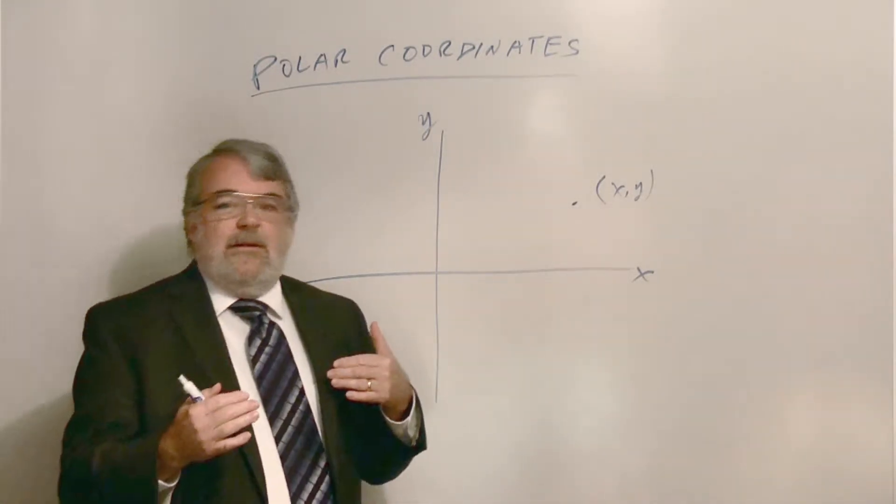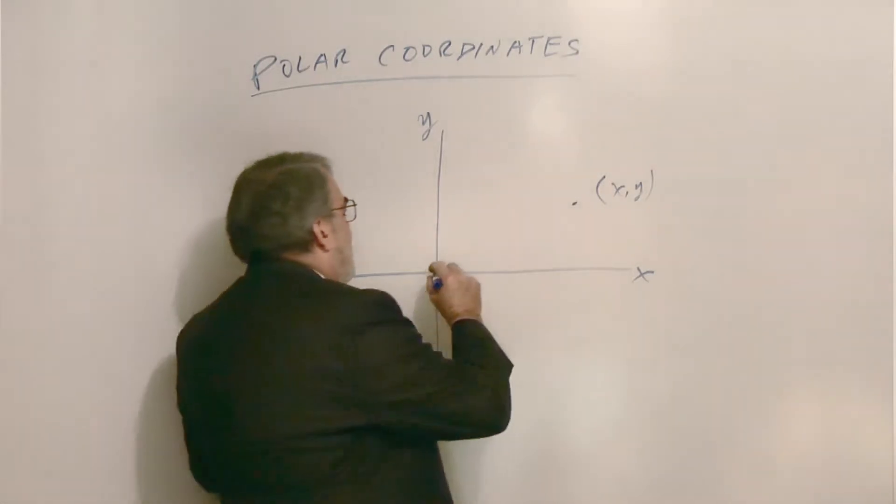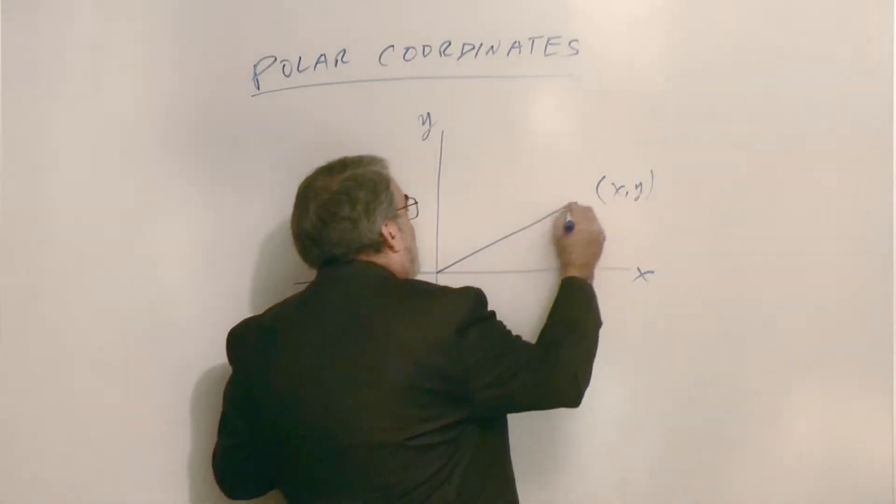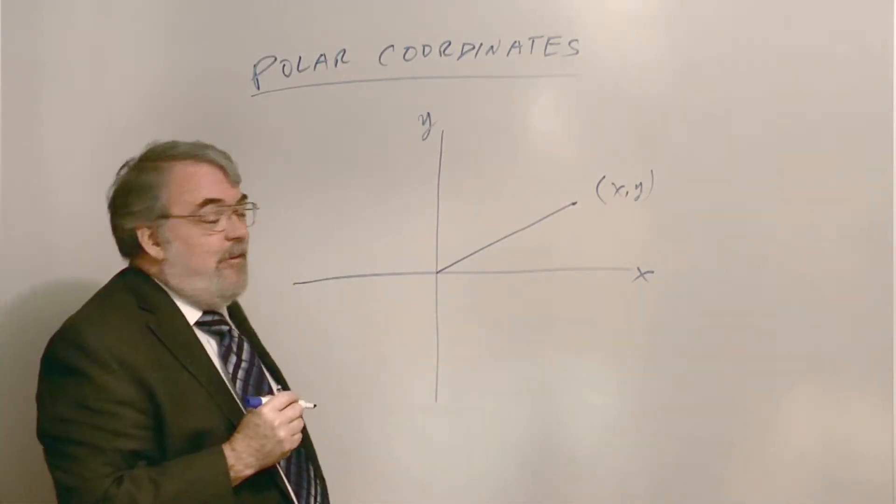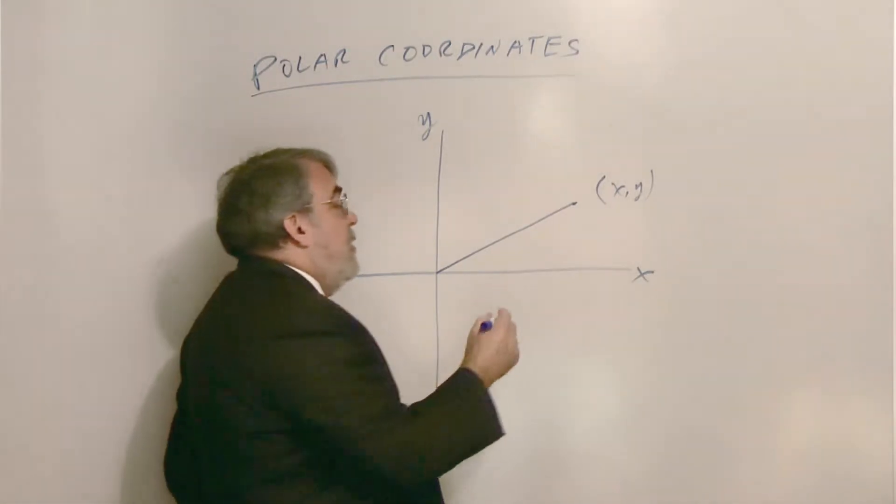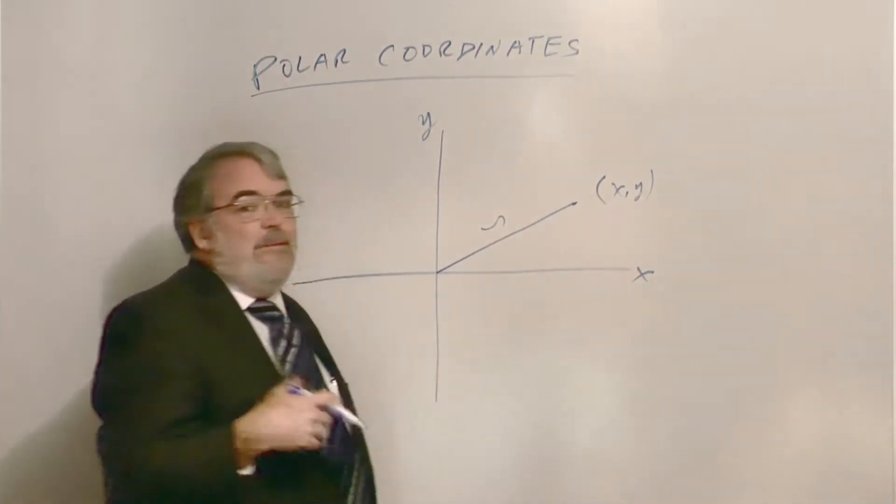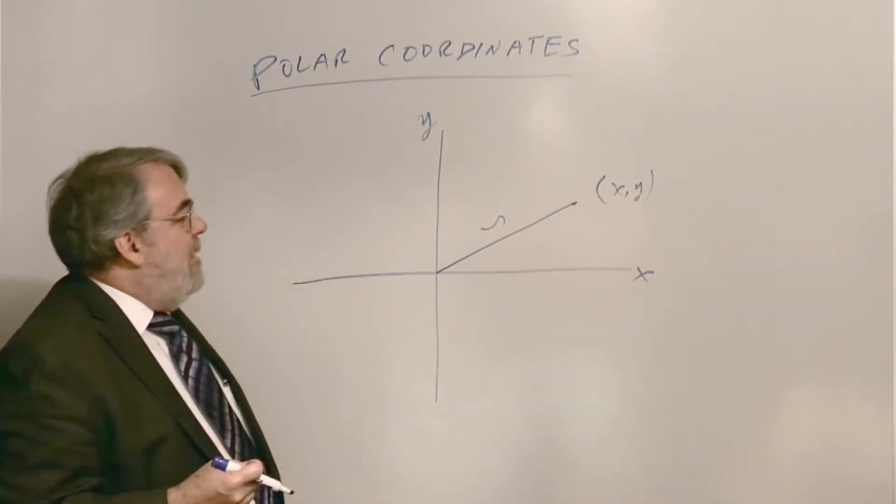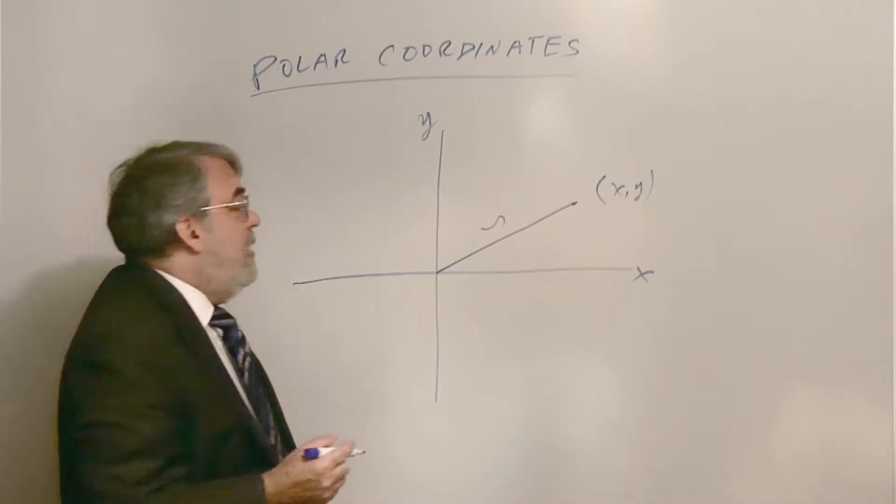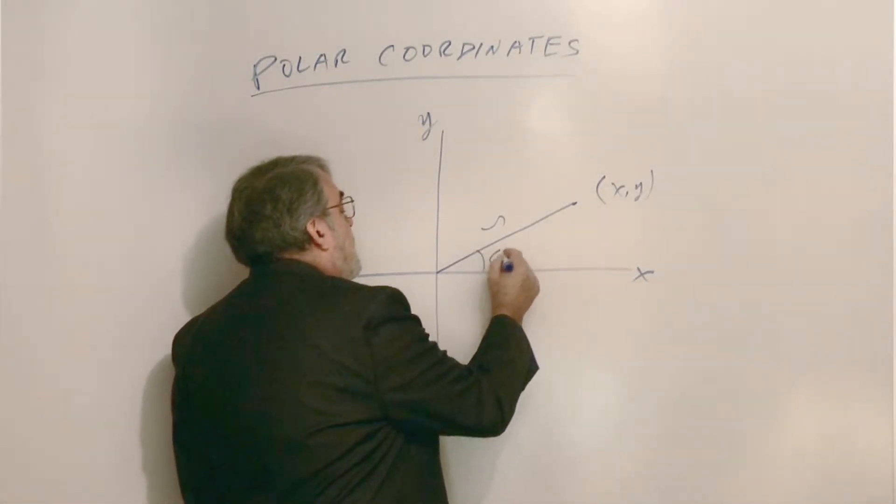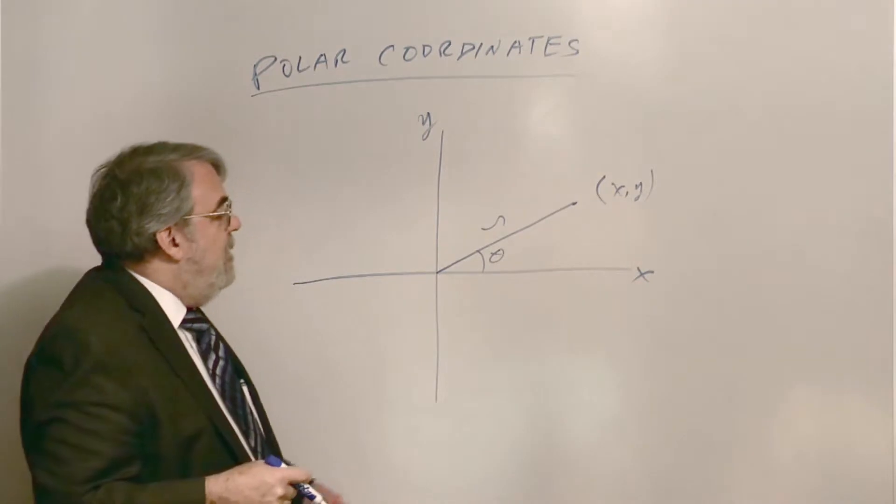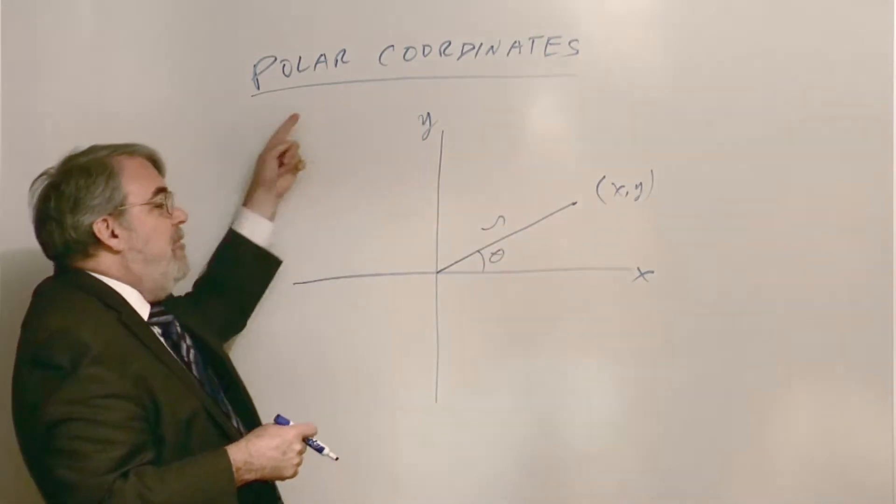One way is what is the distance to the point from the origin, and we'll call that r. Think of r as being radius of a circle. And also we need an angle, and consistent with what we've been doing, we treat angles as positive in the counterclockwise direction starting from the positive x-axis.